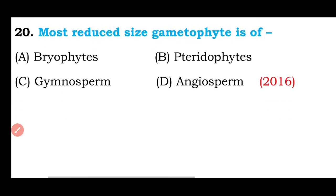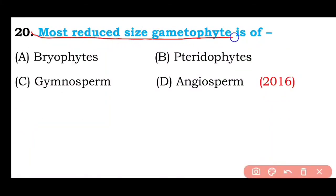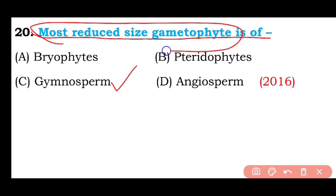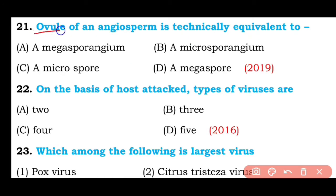Question number twenty: Most reduced gametophyte is of Bryophyta, Pteridophyta, gymnosperms, or angiosperms? The correct answer is option C — the most reduced gametophyte is found in gymnosperms.